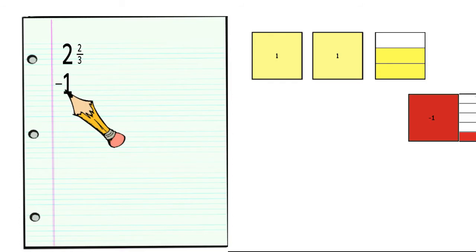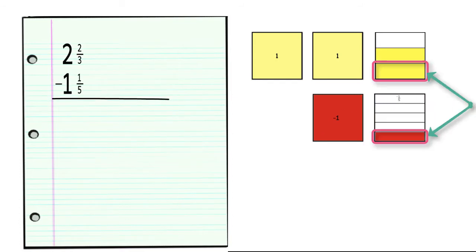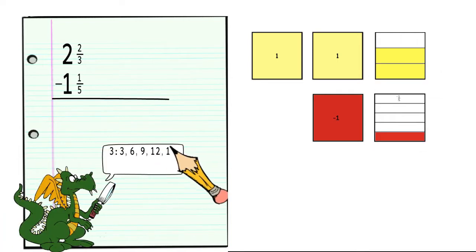Now, let's look at the situation where we don't have common denominators. Two and two-thirds minus one and one-fifth. When we look at the fraction tiles, we notice that the tile cut up into thirds is made of larger pieces than the tile cut into fifths. Before we can subtract, we need to be working with equal-sized pieces. So we need to find a common multiple.